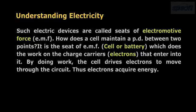How does a cell maintain a potential difference between two points? It is the seat of EMF, that is cell or battery, which does the work on the charge carriers or electrons that enter into it. By doing work, the cell drives the electrons to move through the circuit. Thus, electrons acquire energy.